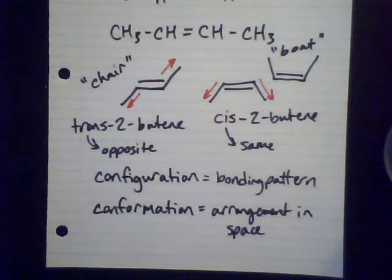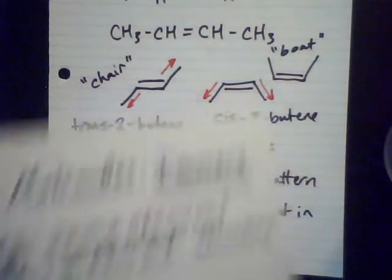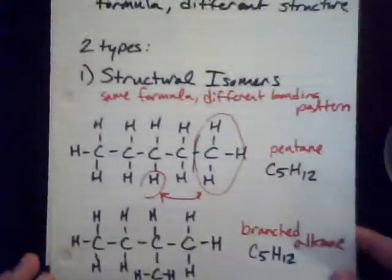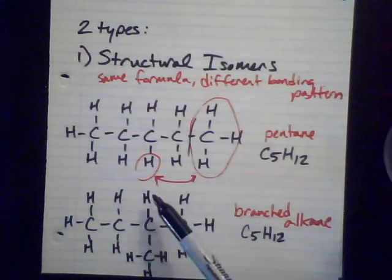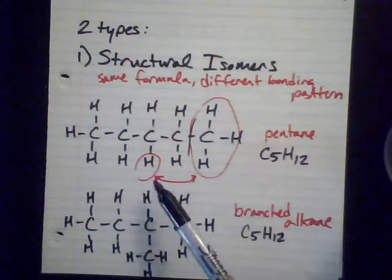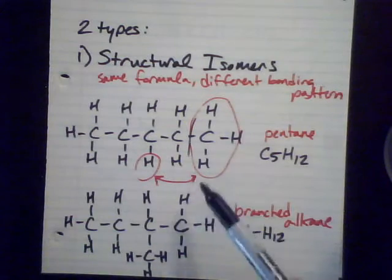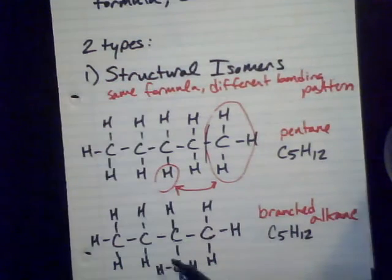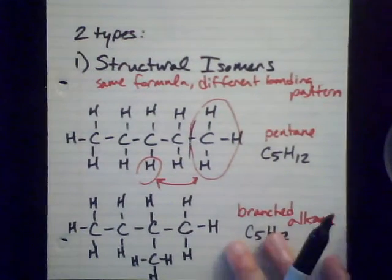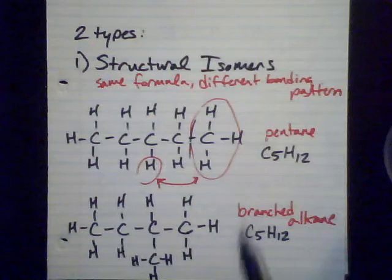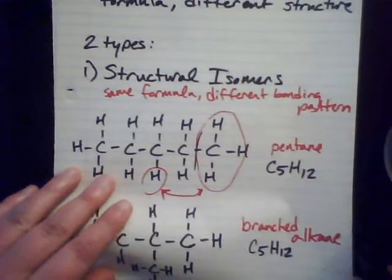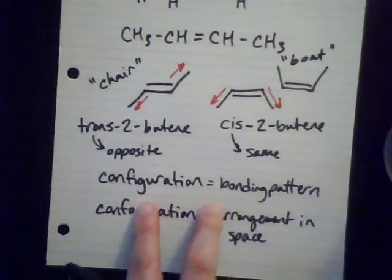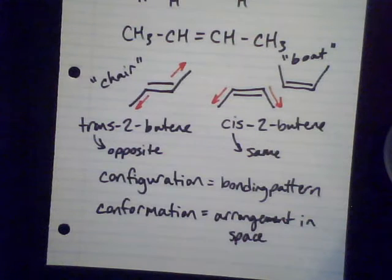So there's a difference between the way something is put together versus arranged in space. With our cis-trans isomers, the molecule is put together the same way but arranged differently in space — same chemical formula, different conformation. With our branched alkanes, we just change the way things are bonded together — same formula, different configuration. That's the distinction between structural isomers and cis-trans isomers.